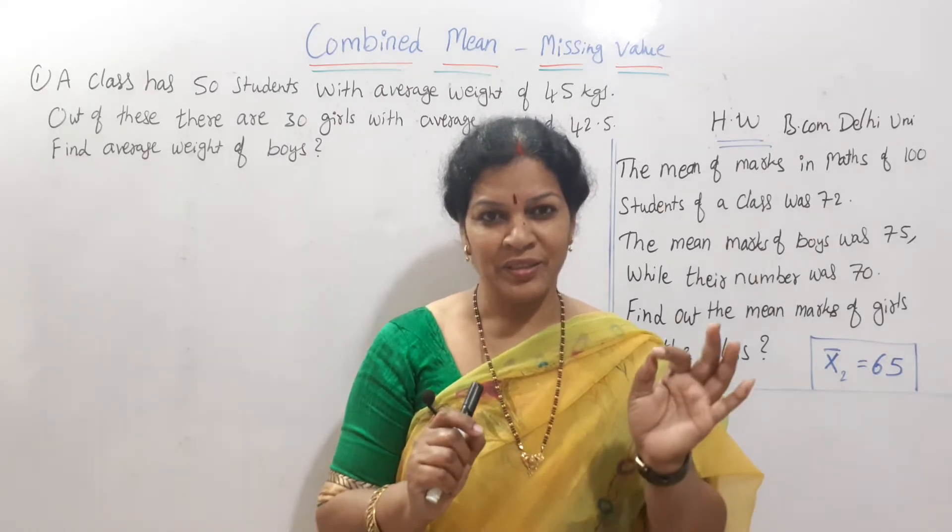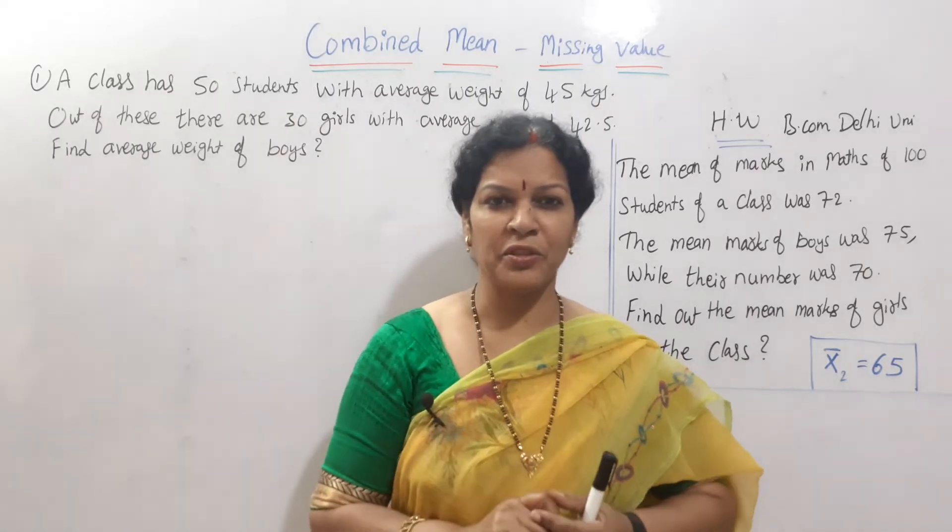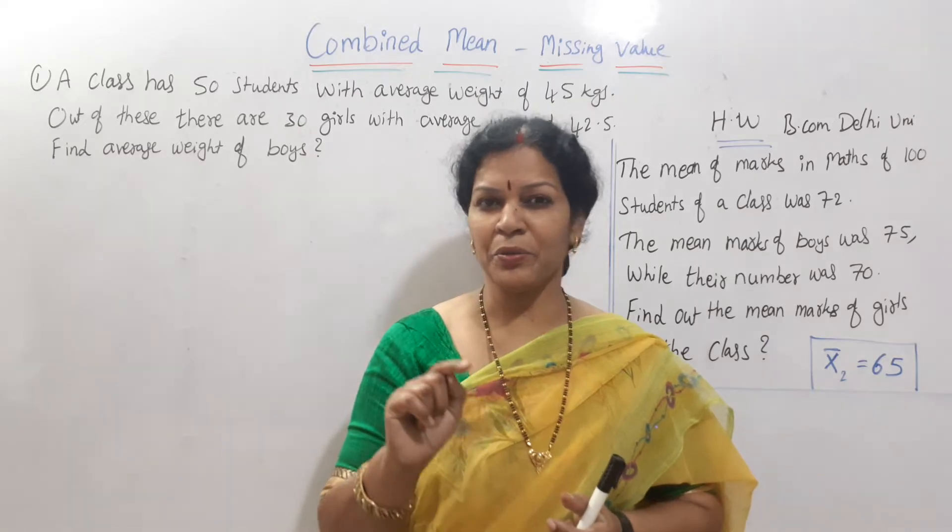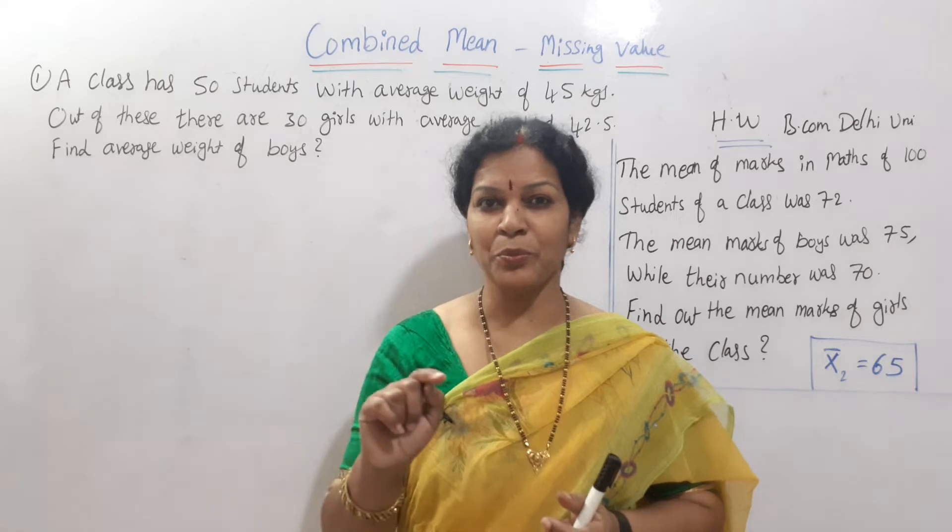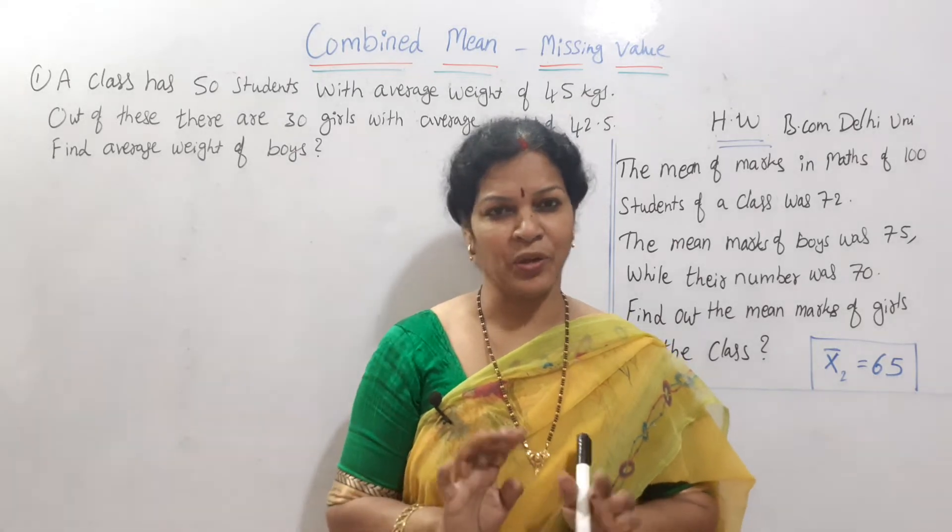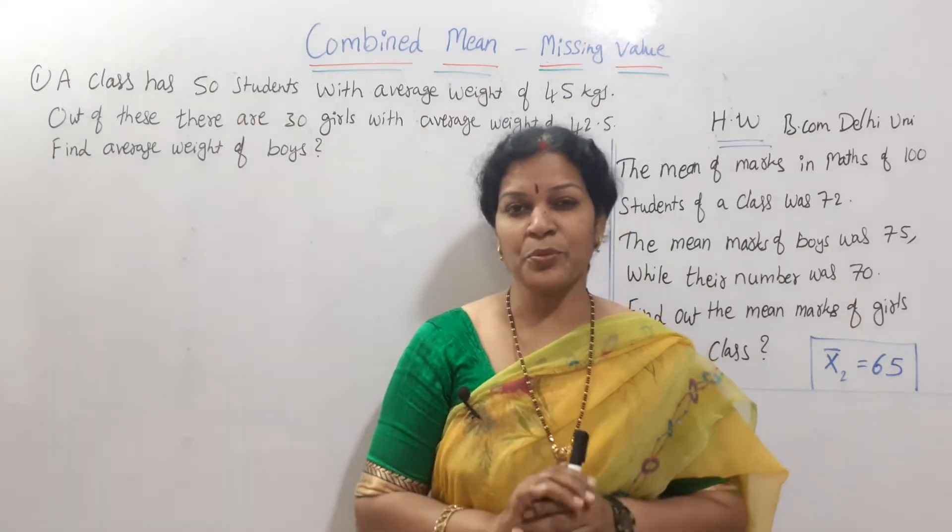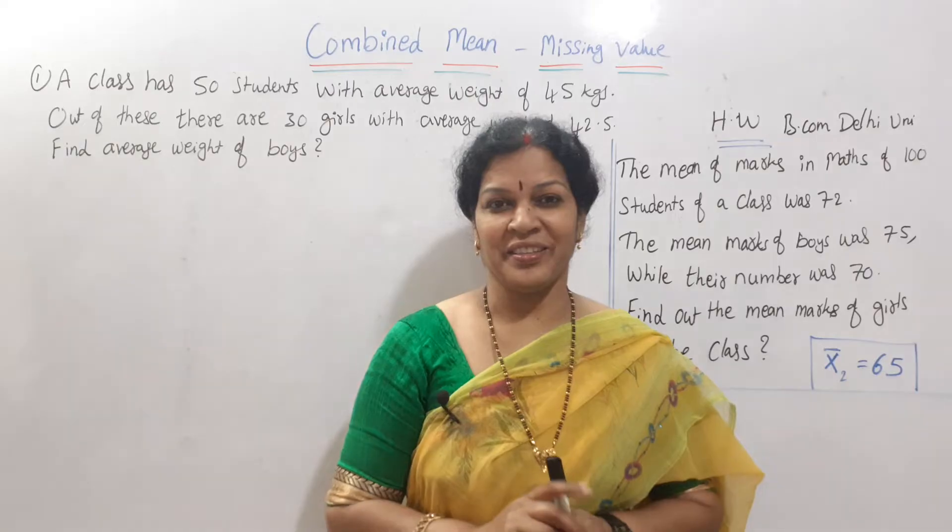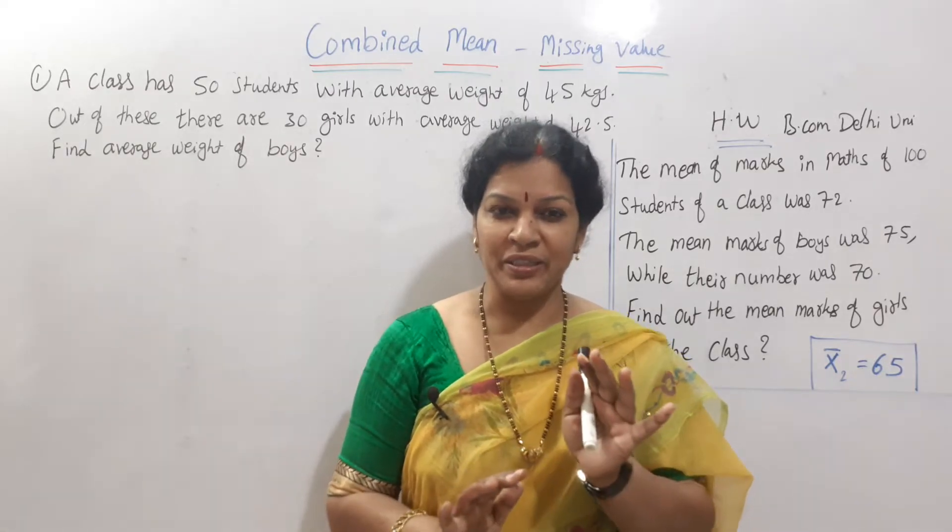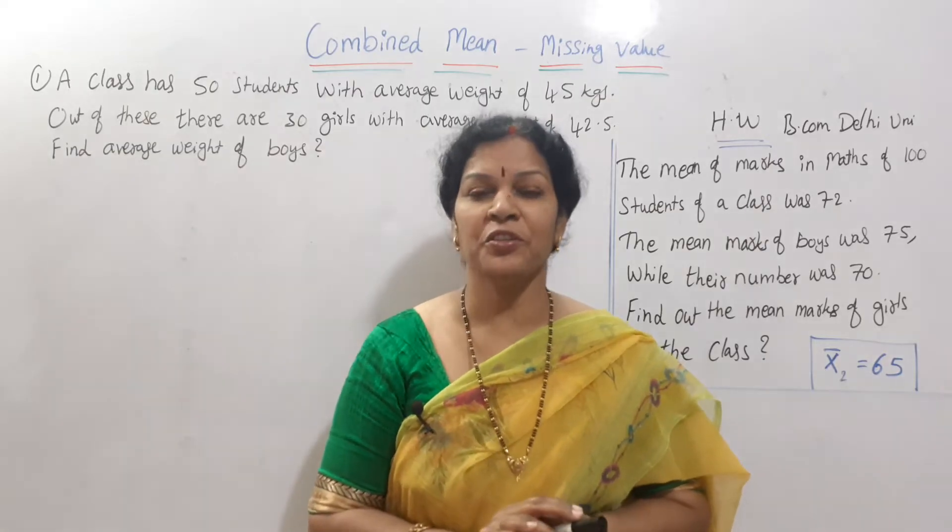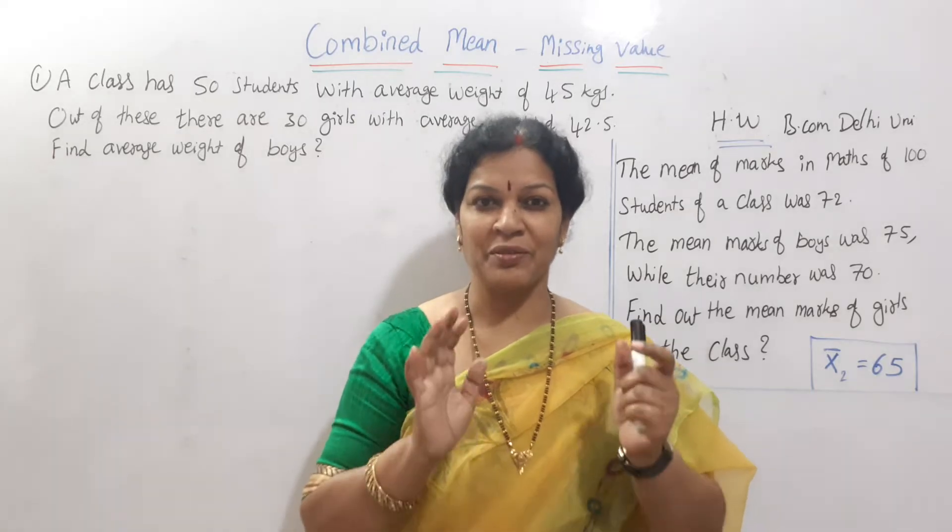Combined mean related problem, if any value is missing, how do we calculate? Did you remember the formula? Formula: X bar 1,2 is equal to N1 X bar 1 plus N2 X bar 2 by N1 plus N2. Formula remembered? Now we will see the problem. They are not asking us in this problem calculate combined mean. Some value is missing that we have to find out. Means by reading the problem, we must be in a position to understand that we have to calculate combined mean to know the missing value.